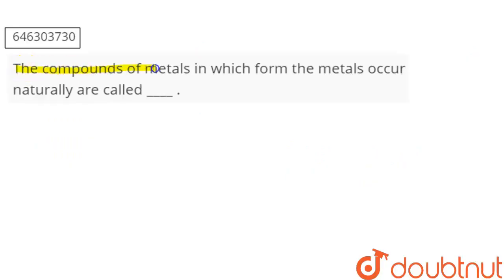The question says, the compounds of metals in which form the metals occur naturally are called. So you have to ask, the compounds of metals in which form the metals occur naturally, what do we call it?